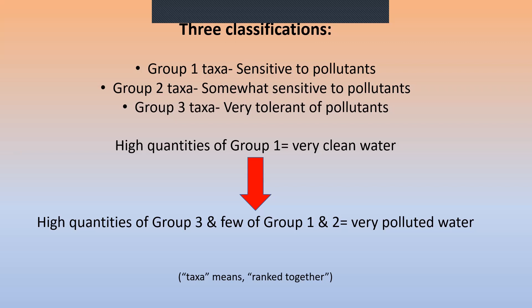There are three classifications of aquatic macroinvertebrates. The Latin term taxa is used here, which means ranked together. In group one taxa, these are creatures that are sensitive to pollutants. Group two taxa are somewhat sensitive to pollutants. Group three taxa are very tolerant to pollutants. These classifications are used because in various streams, lakes, and ponds, scientists and researchers take counts of these creatures.